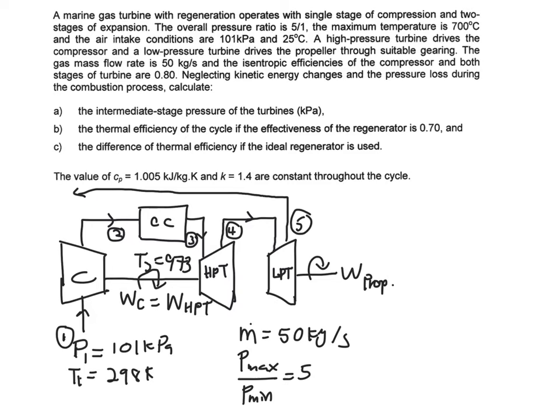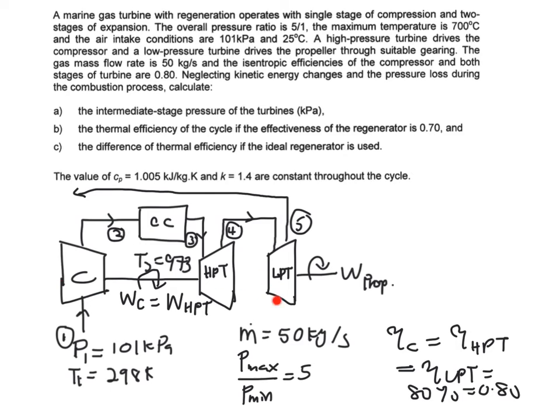And the isentropic efficiency of your compressor and both stages of your turbine are 0.8. It means that your compressor and your high pressure turbine with your low pressure turbine is working on 80% efficiency or 0.8. It means that your device here is not working on 100% conditions. It has irreversibility that makes the efficiency drop to 0.8.